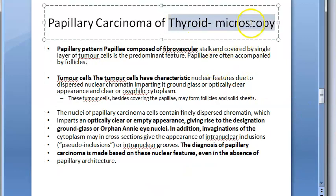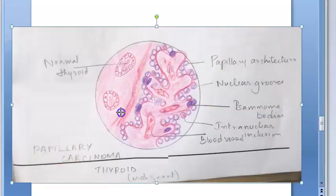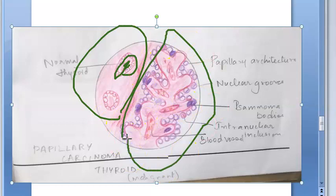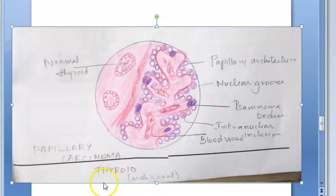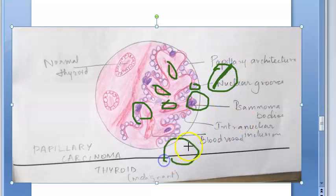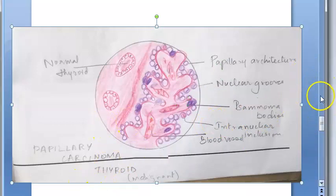For microscopy, in normal thyroid tissue you have follicular cells with colloid in the center. In papillary carcinoma you will see a papillary pattern with papillary architecture. There will be a kind of clear, ground glass appearance in the nuclei. You will also see calcification — these are psammoma bodies. There are blood vessels in the center, and the nuclei show grooves like coffee beans, along with intranuclear inclusions.